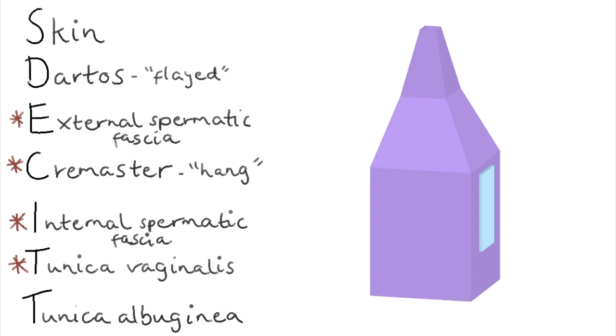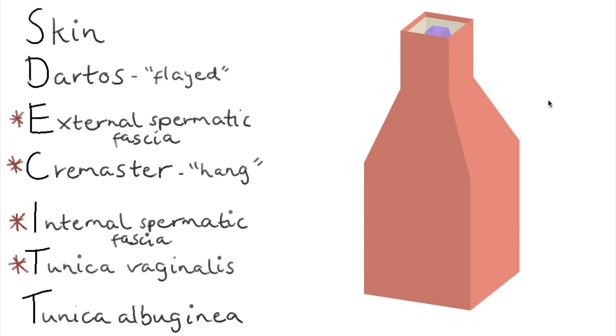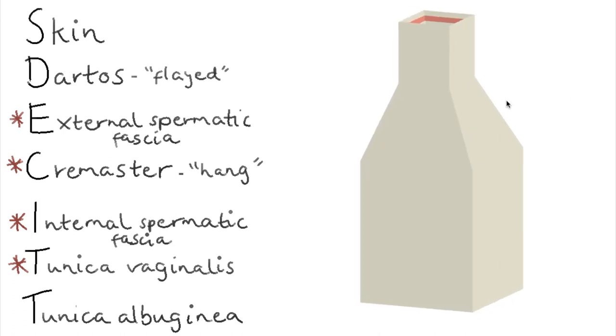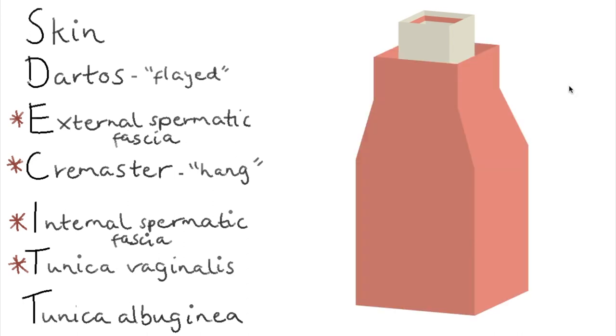We have the internal spermatic fascia, and then surrounding that, the cremaster muscle, meaning to hang. We have the external spermatic fascia, and then we have the dartos, meaning flayed, which wrinkles the scrotum.